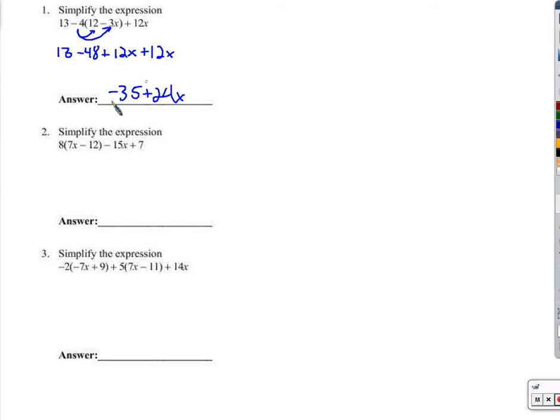12x plus 12x is 24x and that's it. Remember that we can't put these together. We cannot add these together because these are a bunch of ones or a bunch of negative ones, and these are a bunch of x's and they're like apples and oranges. We cannot combine them and put them together like that.